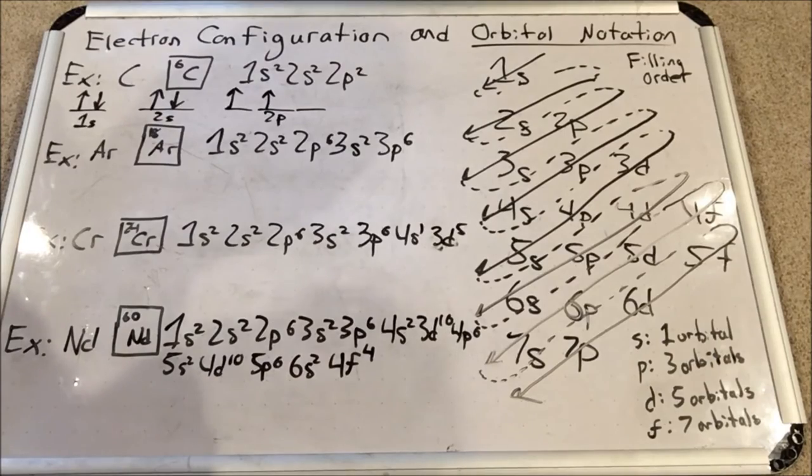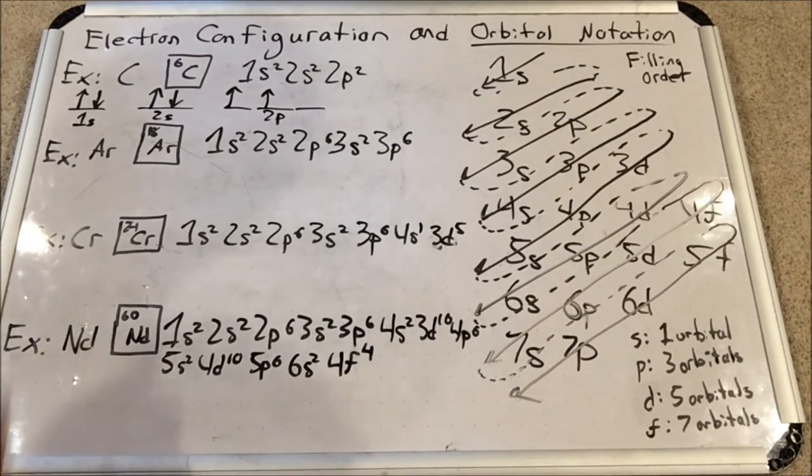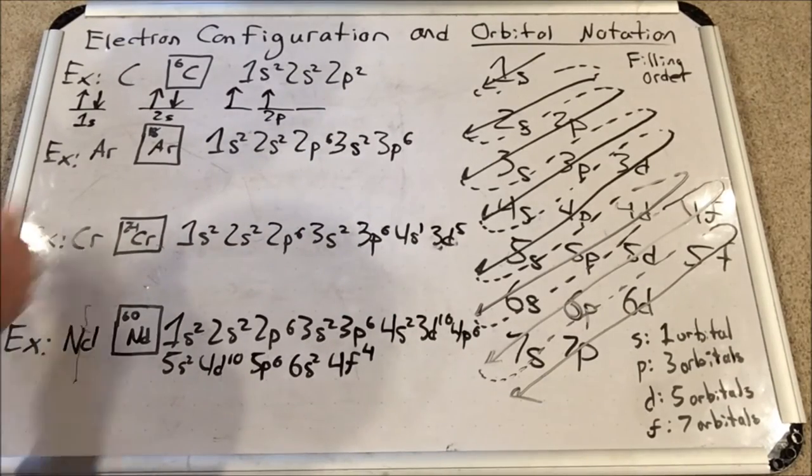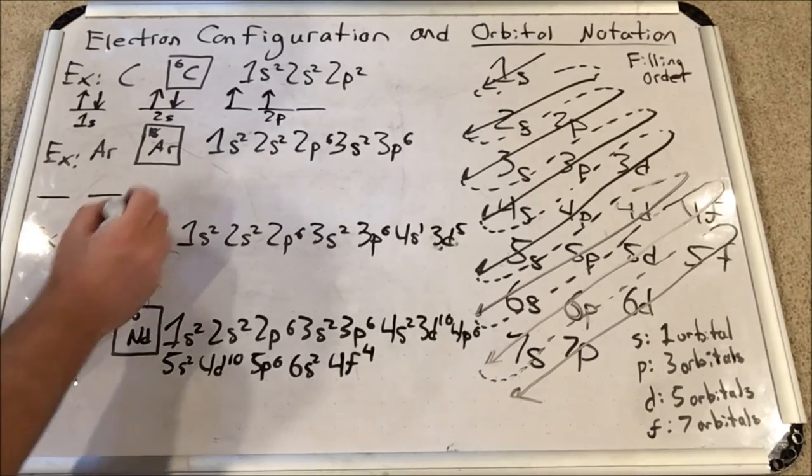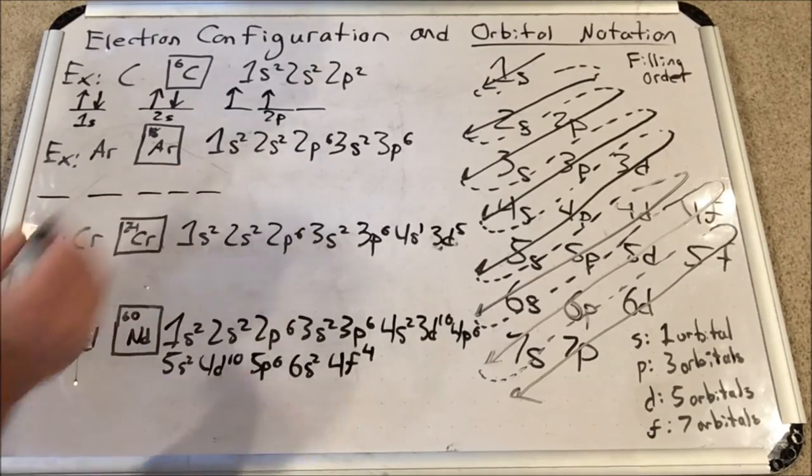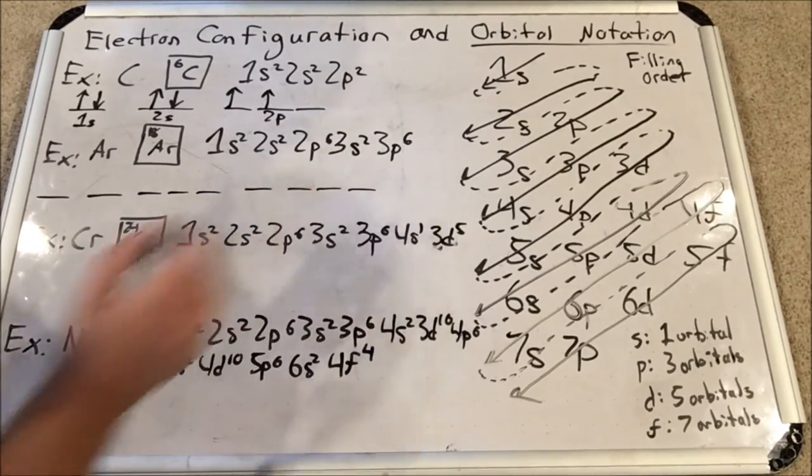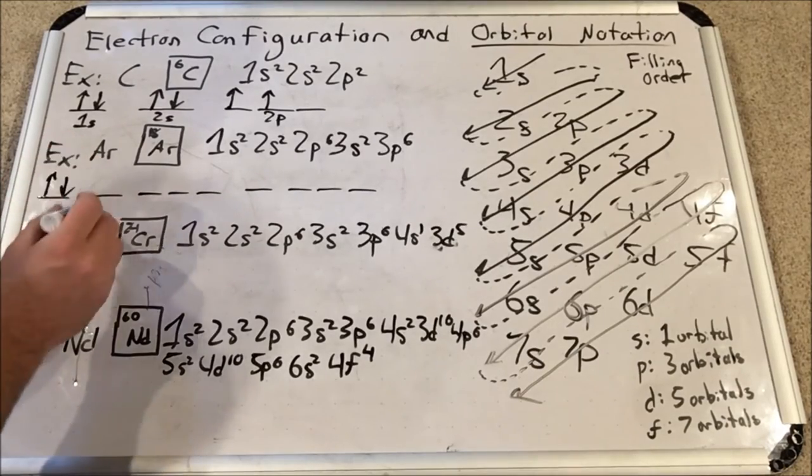Next we have argon. We've got many more sublevels here because we have 18 total electrons. So here's the 1s sublevel, the 2s sublevel, the 2p sublevel, the 3s sublevel, and the 3p sublevel.